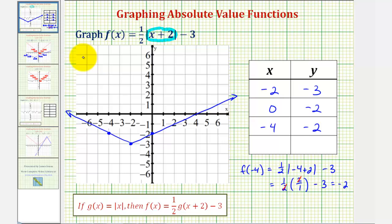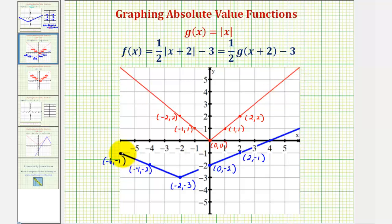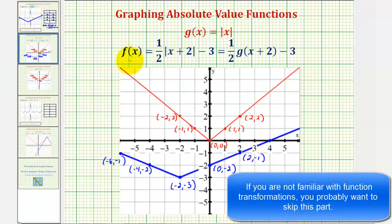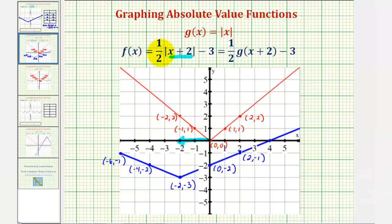There's also a way to graph this absolute value function using transformations of the basic absolute value function. Comparing the basic absolute value function to f of x equals one-half times the absolute value of the quantity x plus two, minus three: because we have x plus two inside the absolute value, it shifts the points left two units. Because of the one-half, we multiply all y-coordinates by one-half, horizontally compressing the function. And the minus three shifts all points down three units. So f of x takes the absolute value function, shifts it left two units, horizontally compresses it by one-half, and then shifts it down three units.